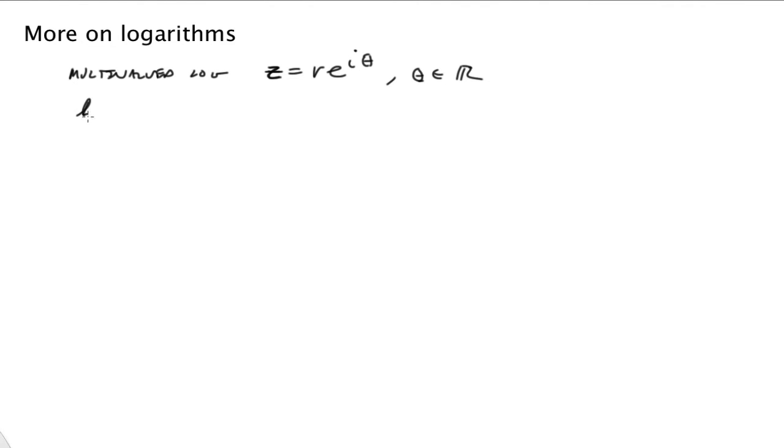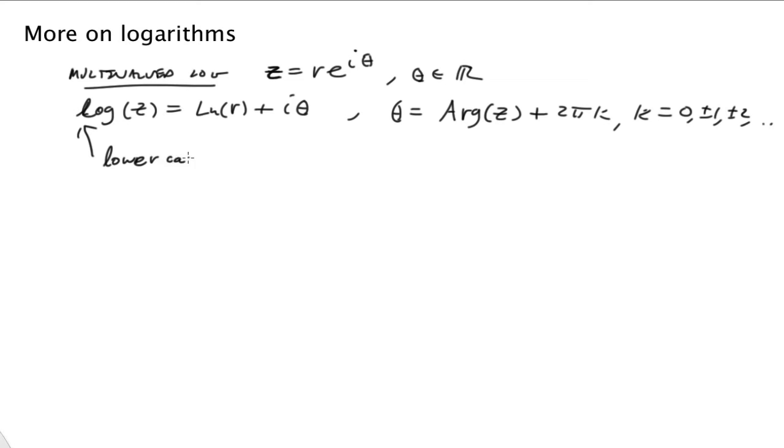So when we write logarithm, I'm going to write it in lowercase to mean the multivalued log, and that'll be log z, and that's going to be equal to natural log of r plus i theta, where again, theta could be lots of different values associated with a particular z value. So in this case, theta could be equal to the principal value of z plus 2 pi k, where k is equal to 0 plus or minus 1 plus or minus 2, and so on and so forth. So this is what we call multivalued log, and I'm going to use a lowercase for that log.